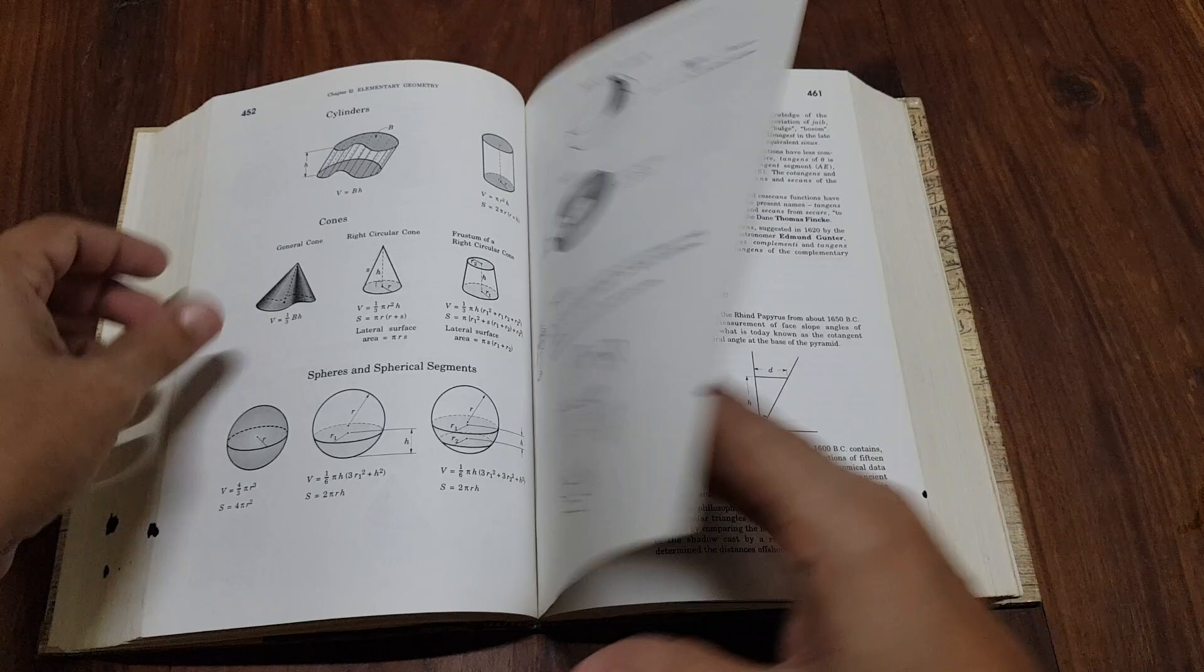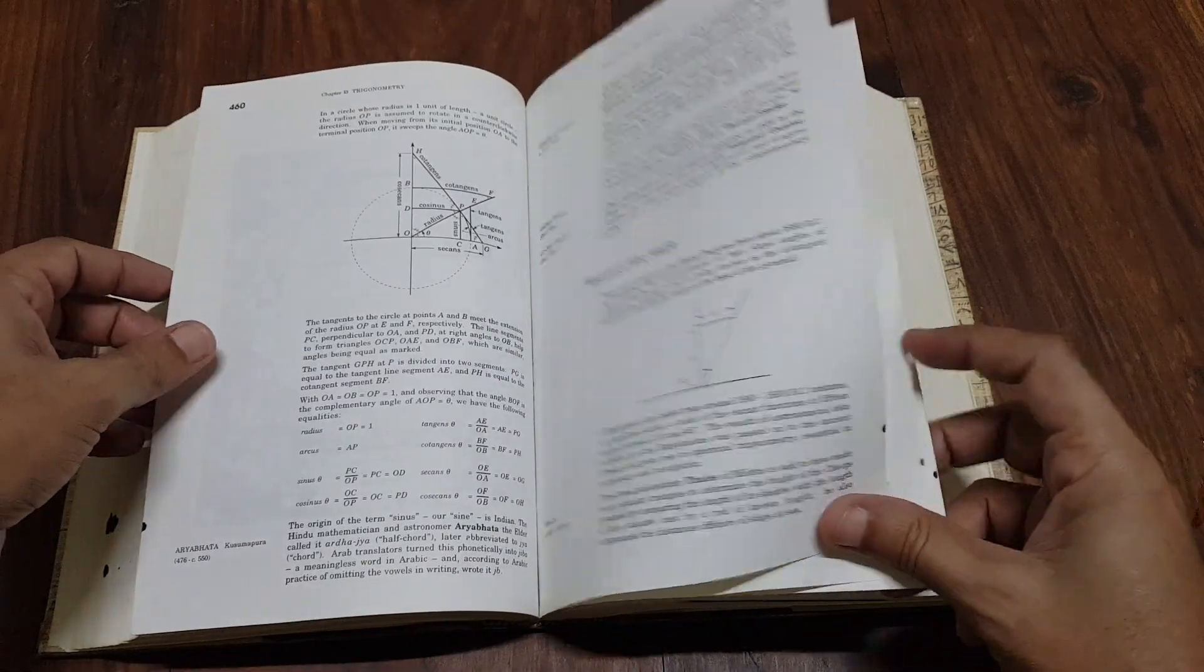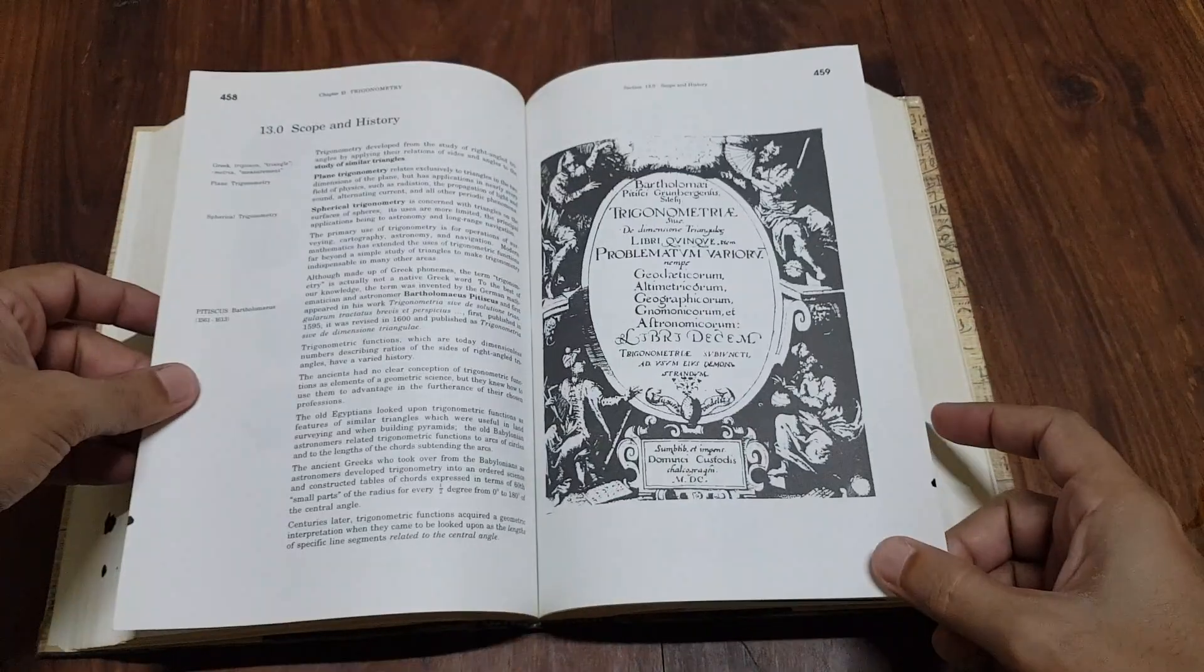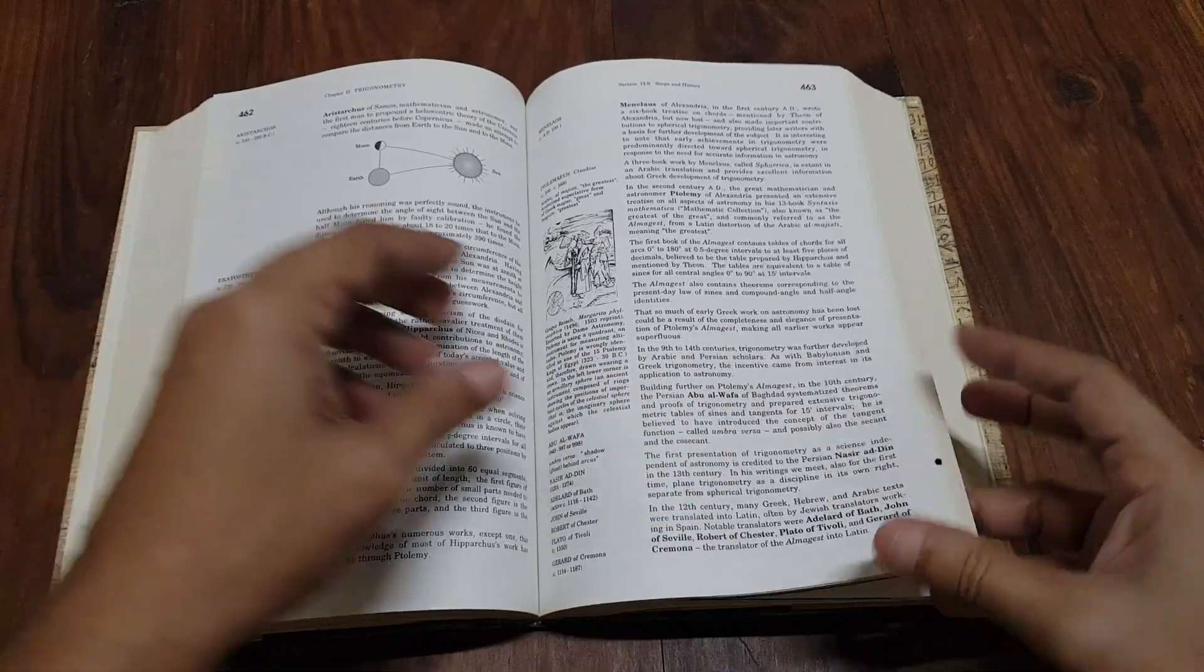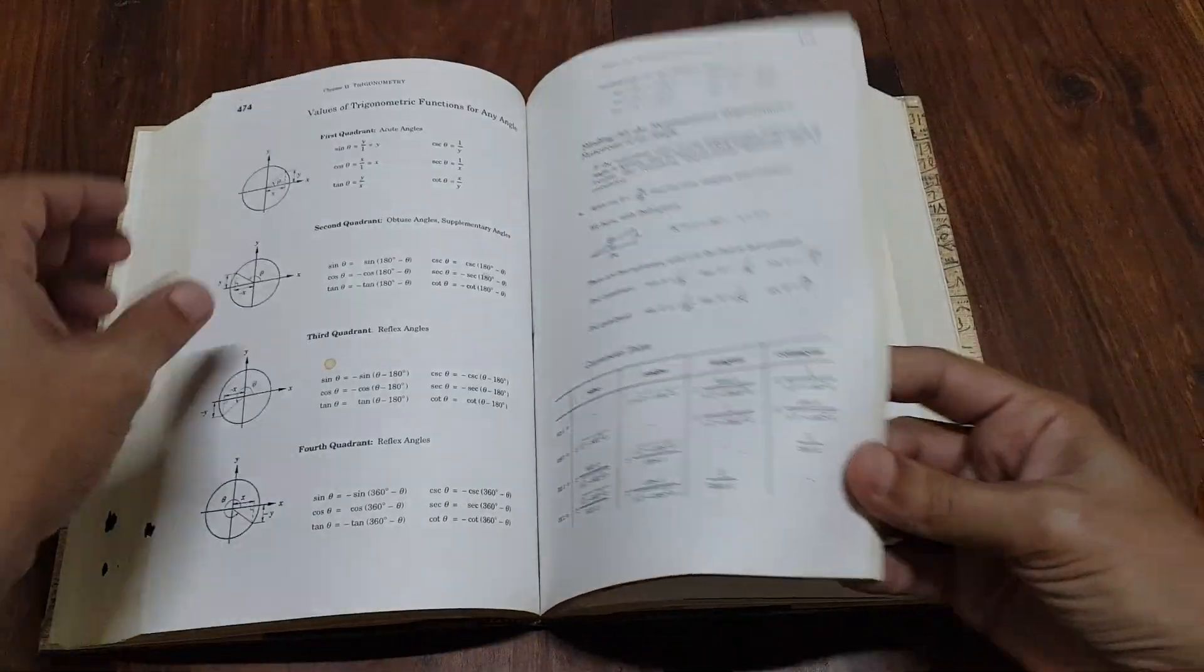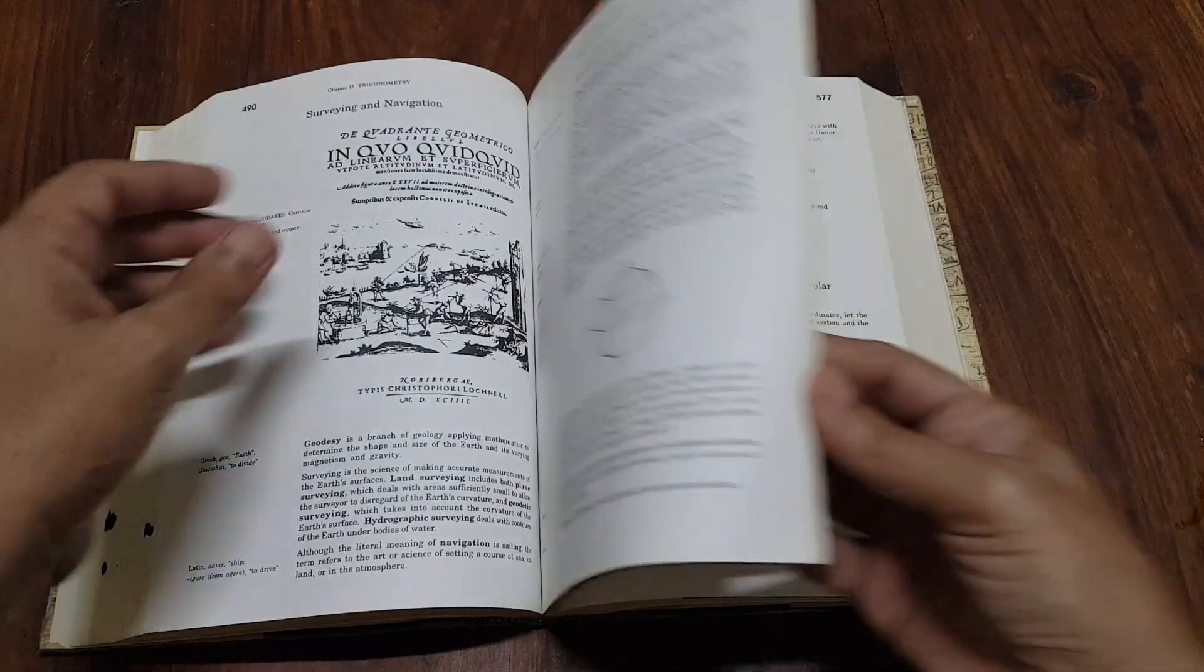Gullberg's writing style is clear and approachable, making complex topics understandable without oversimplifying them. The use of historical context helps readers appreciate the development and significance of mathematical ideas.